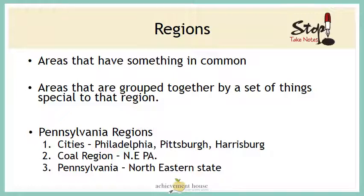The final theme is regions. Regions are areas that have something in common — areas that are grouped together by a set of things special to that region. Looking at Pennsylvania, a few regions we have would be the cities: Philadelphia, Pittsburgh, and Harrisburg are our biggest cities and each is considered a region. There is also the coal region in Northeast Pennsylvania. And Pennsylvania is part of the Northeastern region of the United States.